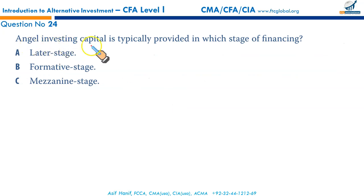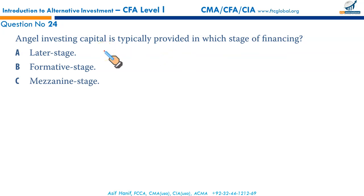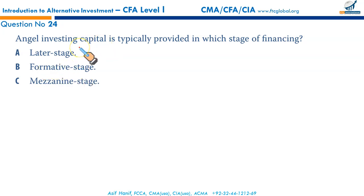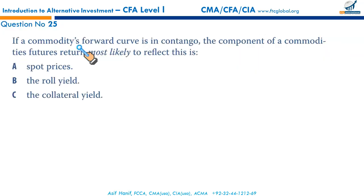Angel investing capital is typically provided at which stage of financing? Angel investing capital is provided at the formative stage — not the later stage. Once seed capital is provided by venture capitalists, then in the early formative stage of financing, angel capital is provided. That makes B the correct option.